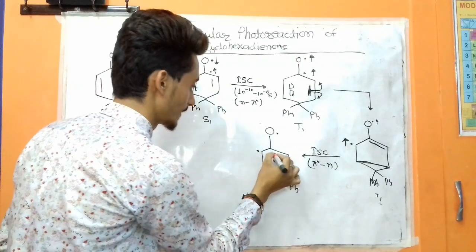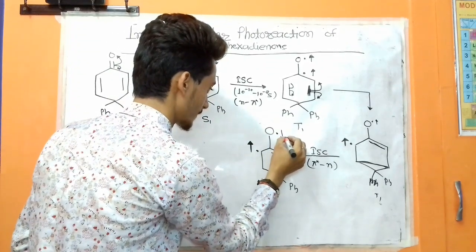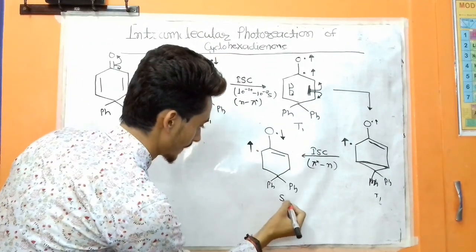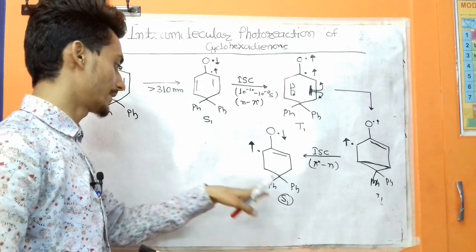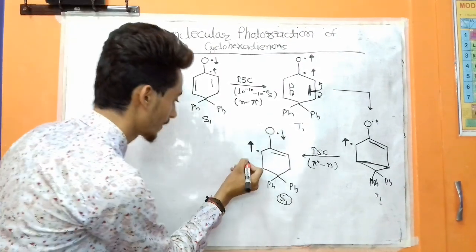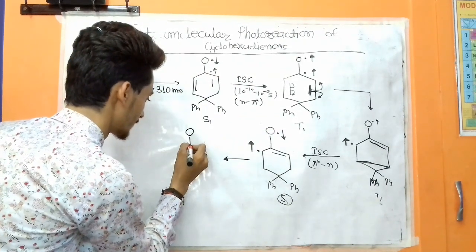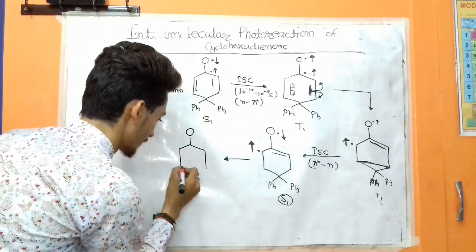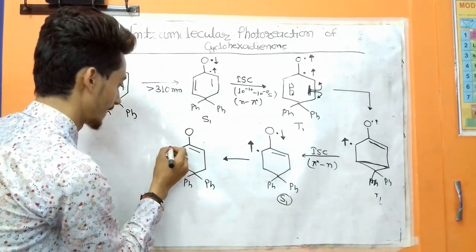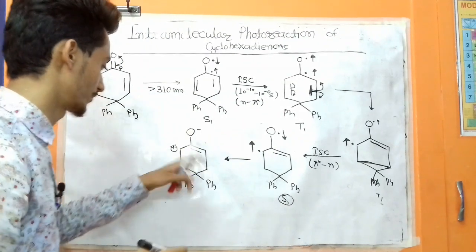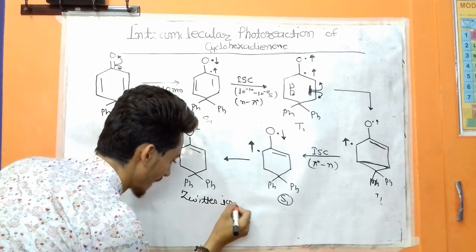These electrons are in the S1 state — without spin conversion. After formation of the S1 state, a zwitterion is formed as an intermediate. There is an aryl group, a double bond, a positive charge, and a negative charge — this is the zwitterion intermediate.